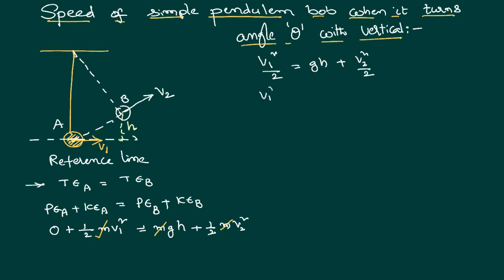By multiplying with 2, V1 square equals 2gh plus V2 square. We want to calculate V2 if V1 is given. So we can write V2 square equals V1 square minus 2gh. Therefore we can say V2 equals square root of V1 square minus 2gh.